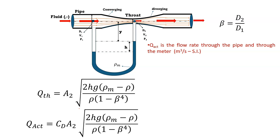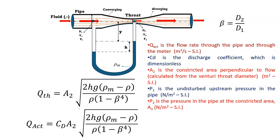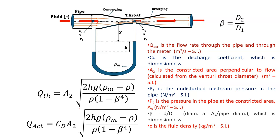Q_actual is the flow rate through the pipe; CD is the dimensionless discharge coefficient; A2 is the constricted area perpendicular to flow; P1 is the upstream pressure; P2 is the pressure at the constricted area; β = D2/D1; ρ is the fluid density; and ρM is the manometer fluid density. So finally, from this derivation, Q_actual = CD · A2 · √[2·H·g·(ρM − ρ) / (ρ·(1 − β⁴))], which allows us to calculate the flow rate through the pipe. Thank you.